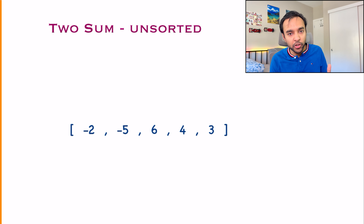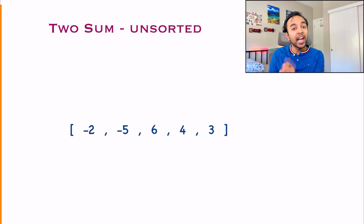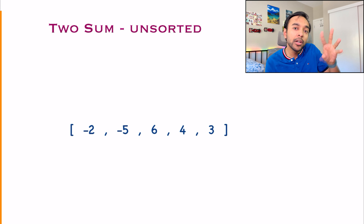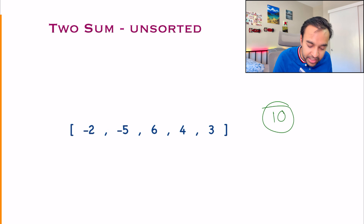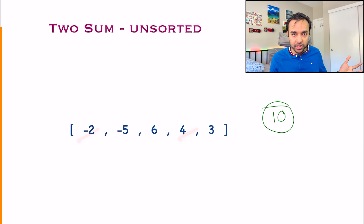Let us take a look at some familiar examples. You are given an unsorted array and you have to tell if there are any two integers that sum up to a particular number — let us say the desired sum is 10. A brute force way would be to pick up two elements every time and find the sum, which takes O(n²) time. But you can do something more efficient.